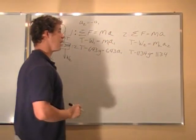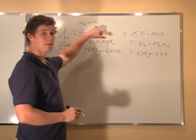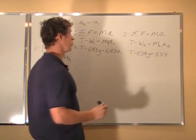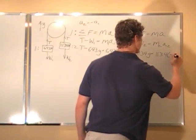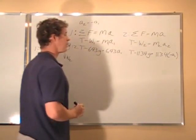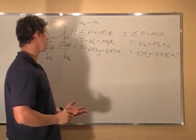We will put the tension as the same. Weight two now is 1134 times g equals mass two of 1134. a2 now, I am going to plug in and substitute negative a1 for. Now, I have two equations and two unknowns.